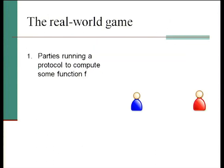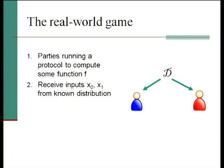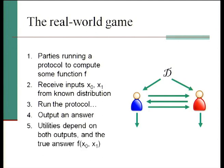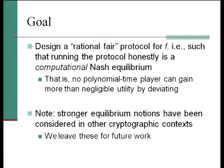The real-world game we define has parties trying to compute some function f. They get inputs from a known distribution — any joint distribution, no restrictions. They run a protocol using potentially that input, output some answer, and receive utility that can depend on both their output, the other party's output, and the true answer to the function. Our goal is to design a rational fair protocol for f, meaning one where running the protocol as specified is a computational Nash equilibrium — where no player can gain more than negligible utility by deviating, with the gain required to be negligible in the security parameter.